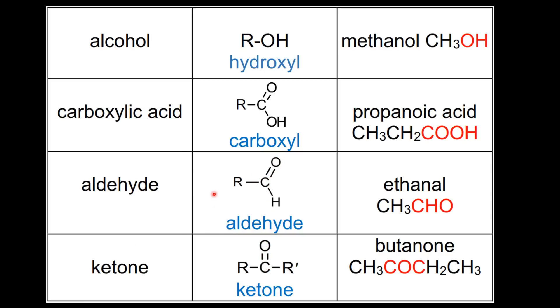In the aldehydes the carbonyl group is bonded to one other alkyl group; in the ketones it's bonded to two alkyl groups. An example of an aldehyde is ethanal, and an example of a ketone is butanone.